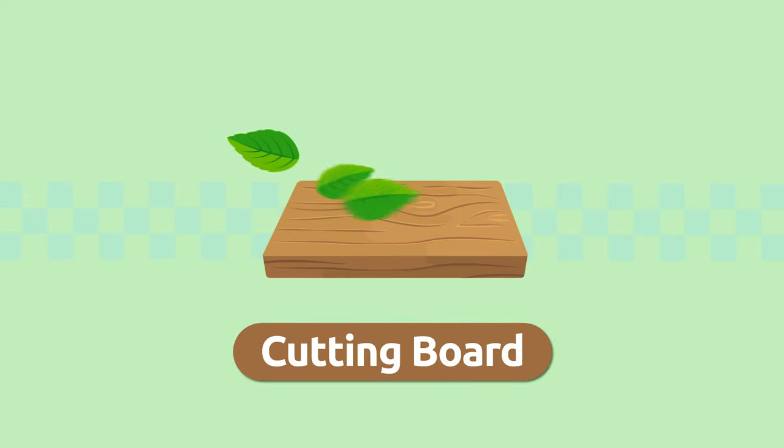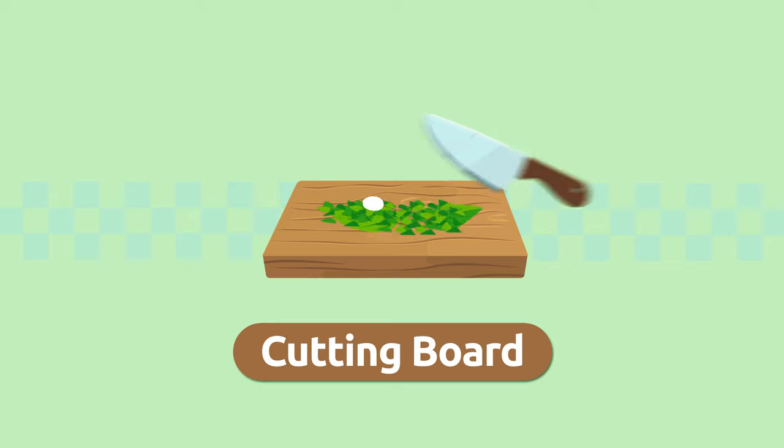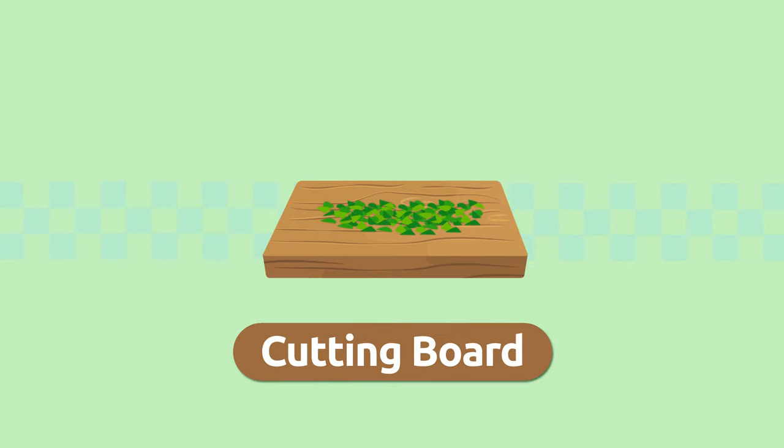Cutting board — it's a flat surface that you chop food on. It can be wooden or plastic. Cutting board.